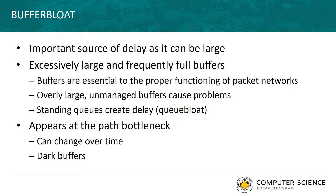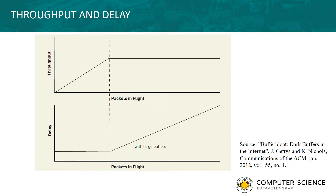Let us take a closer look at the cause for buffer bloat. First we need to understand the relationship between throughput and delay as we send an increasing amount of packets into the network, illustrated in the graph on this page. On the x-axis you have the packets in flight; on the top graph you have the throughput and on the bottom graph you have the delay. As we send an increasing amount of packets at an increasing rate, the throughput will go up, continuing until you are fully utilizing the capacity — at which point throughput remains constant.